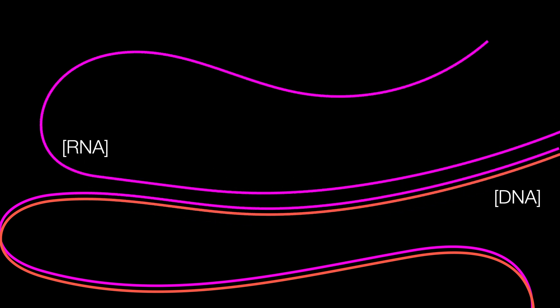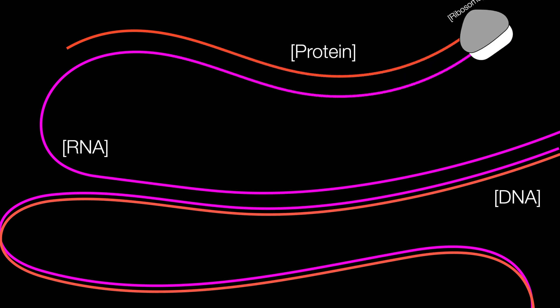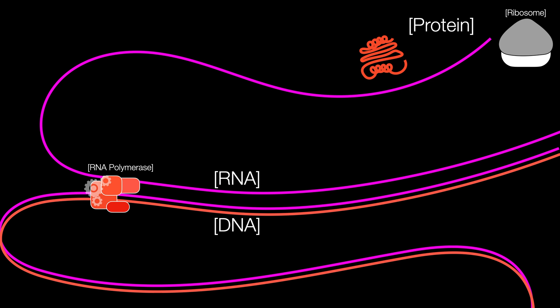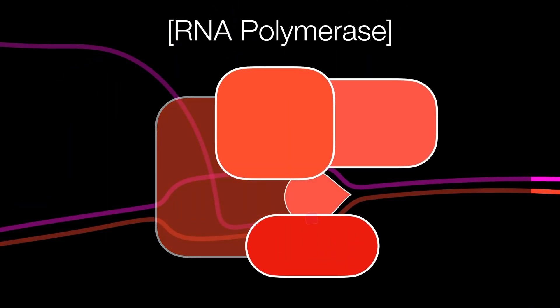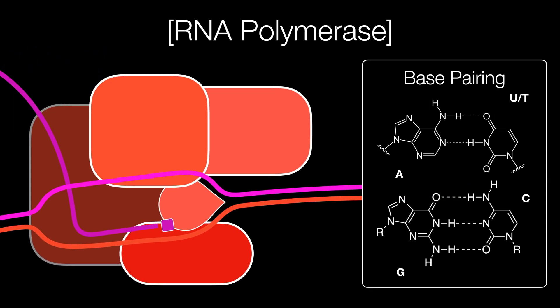As we've covered before, the central dogma is the process by which DNA encodes instructions for proteins that carry out cellular functions. This process involves the transcription of DNA into RNA by RNA polymerase, and the translation of RNA into protein by ribosomes. The difference between RNA and DNA is that RNA uses a different backbone molecule and replaces thymine, T, with uracil, U.